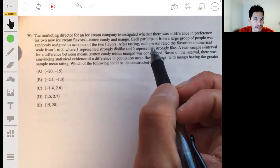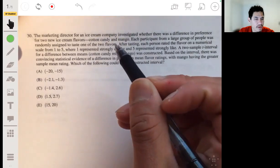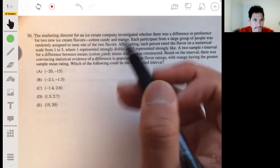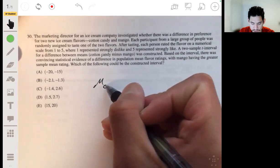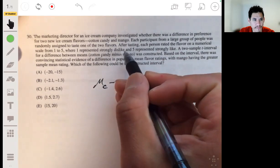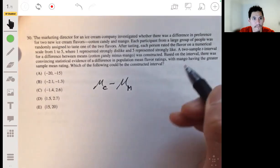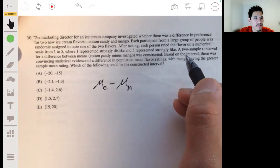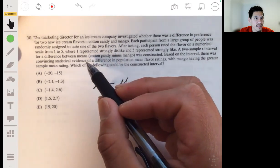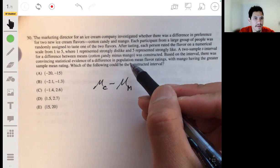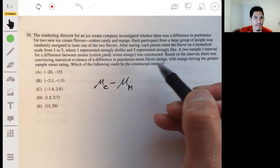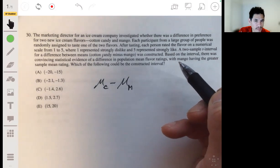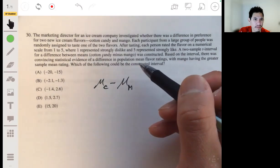So we have a two sample T interval for difference of means, cotton candy, we're going to call that mu sub c, minus the mean of mango, so mu sub m. What's constructed? But based on the interval, there is convincing statistical evidence of a difference in population mean flavor ratings, with mango having the greater sample mean rating.